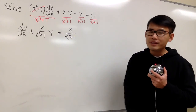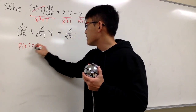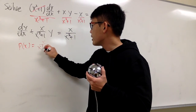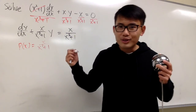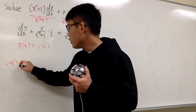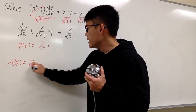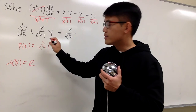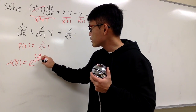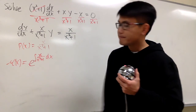Now we are ready. P of x is positive x over x squared plus 1. We can go ahead and compute the integrating factor. Mu of x is e raised to the integral of x over x squared plus 1 dx.